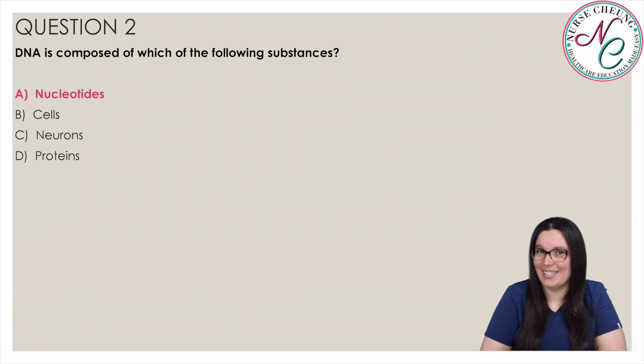This one's a little bit easier. It's A, Nucleotides. Understanding the role of DNA is important in understanding questions about it. DNA stores the genetic information necessary to creating living matter and beings. Choices B, C, and D are all created by DNA and RNA. DNA itself is composed of nucleotides.